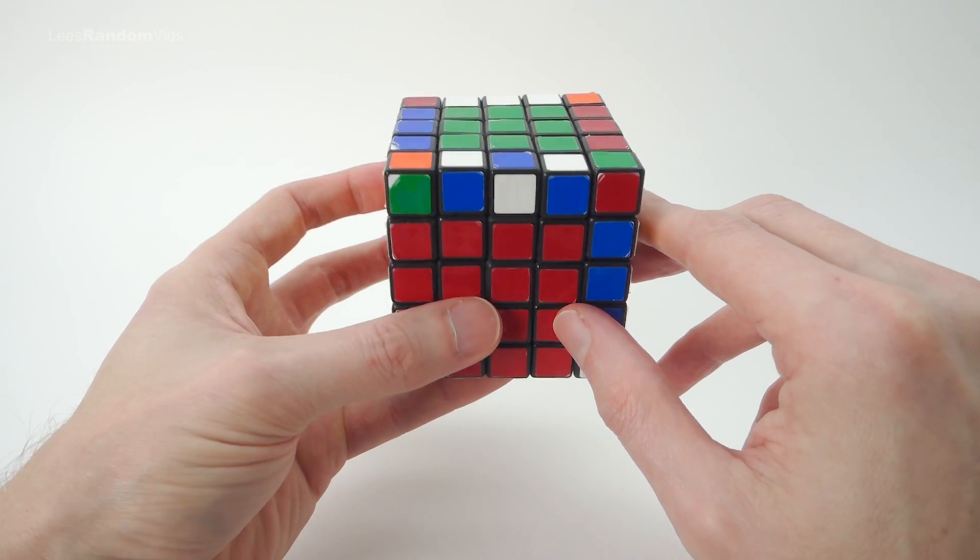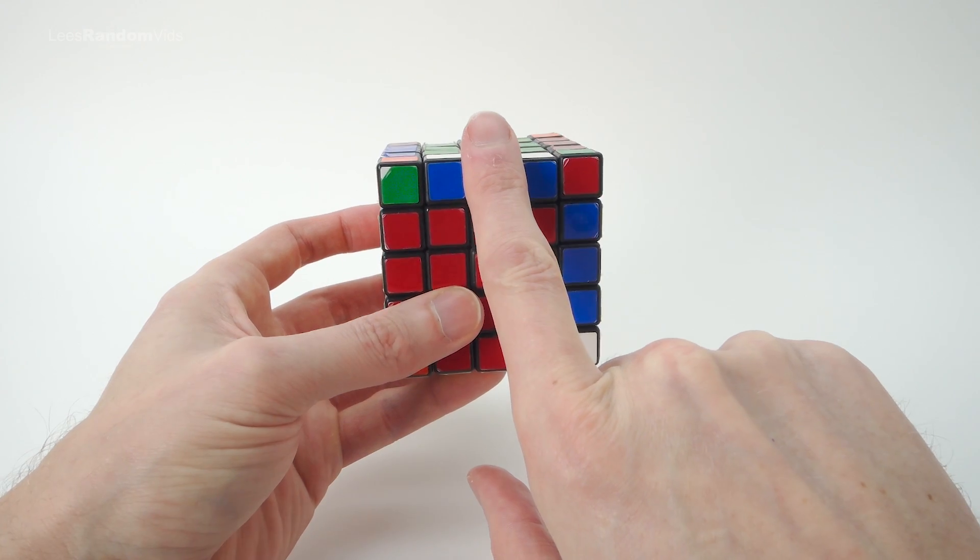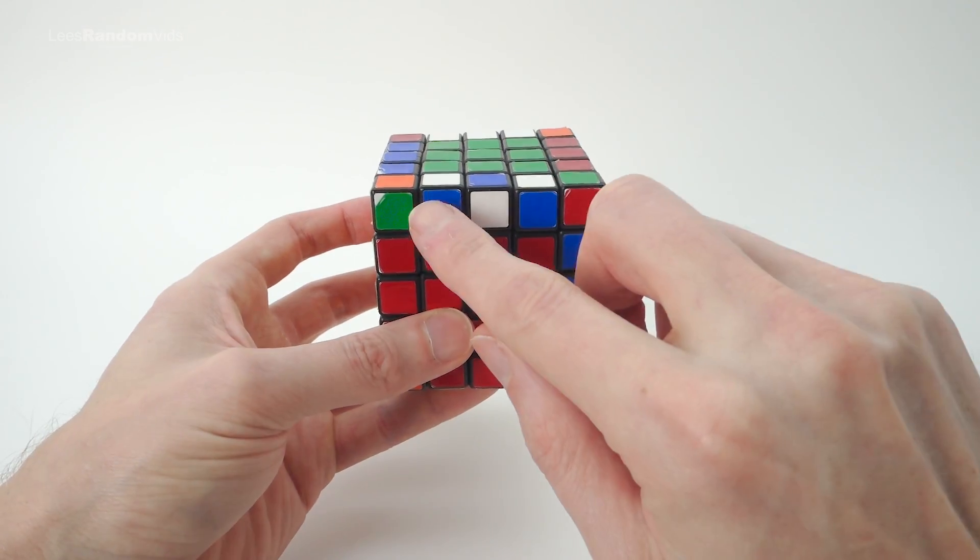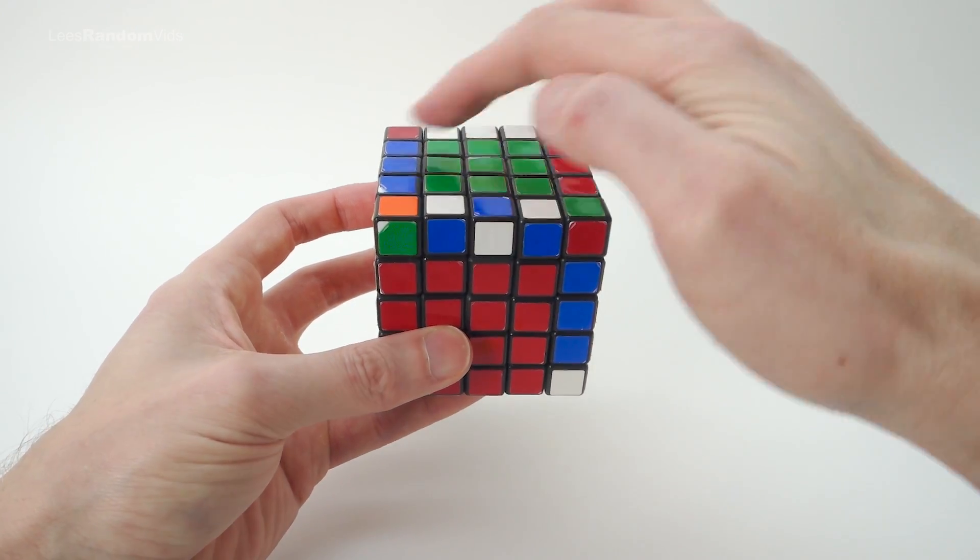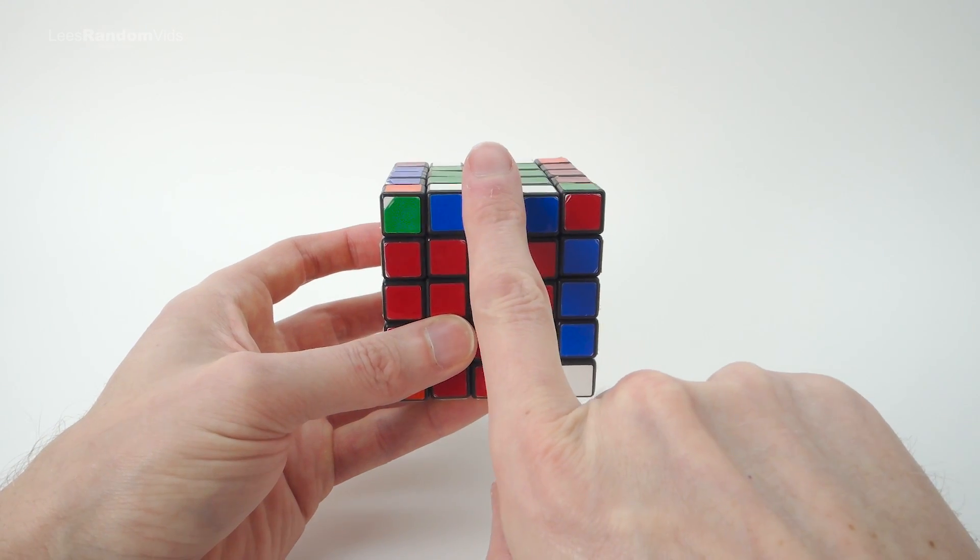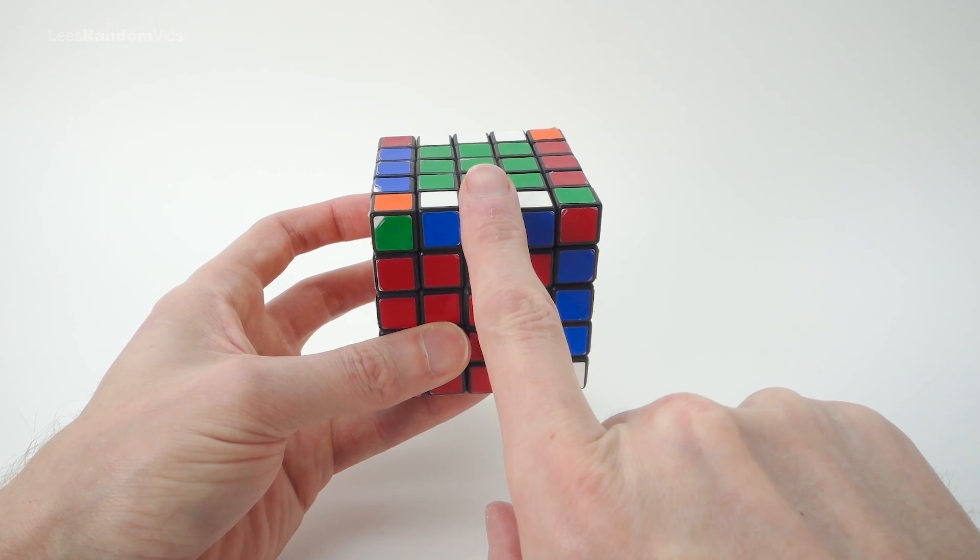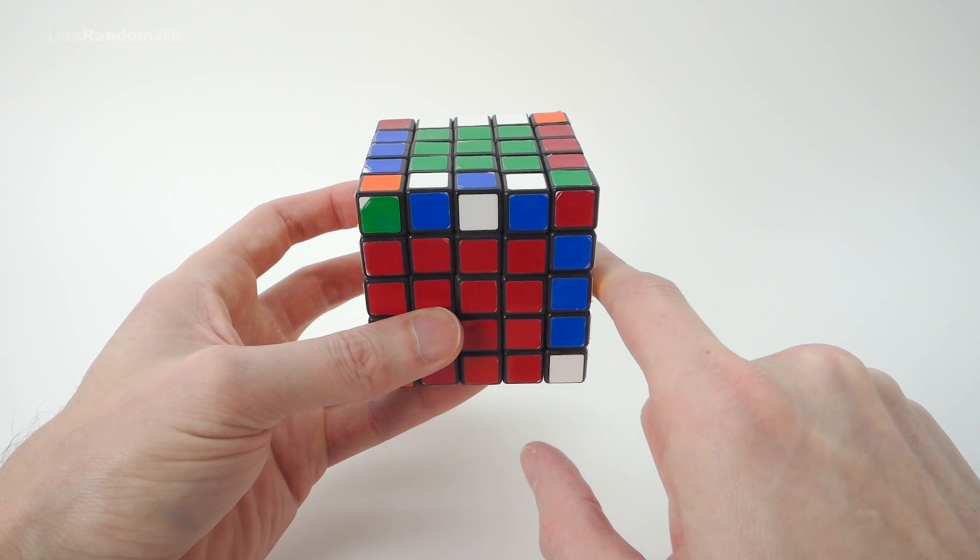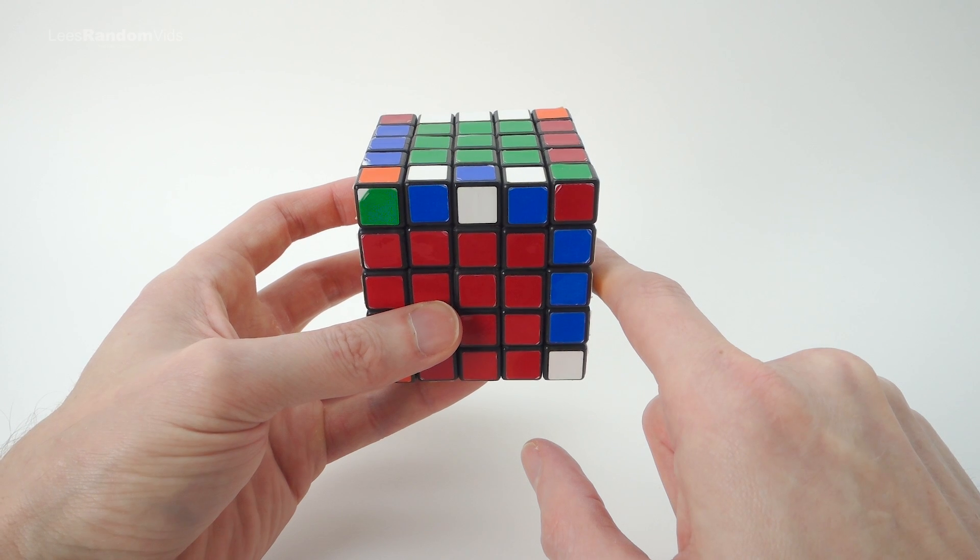So this parity error if you look at it is basically the same parity error that you run into on the 4x4. Remember on the 4x4 when you come to make the blue cross on the top, sometimes you get this blue on the side and the other color on the top and the other three are correct. Well, that's the parity error on the 4x4. Well, it's the same on the 5x5, just think these two are wrong. And we will use the same algorithm that we use to solve the parity error on the 4x4. We'll use the same one on the 5x5. So if you've already memorized the algorithm then you already know how to get out of this parity error.